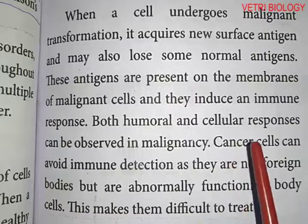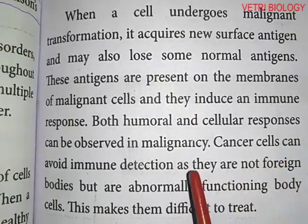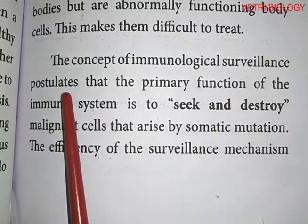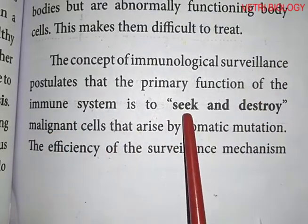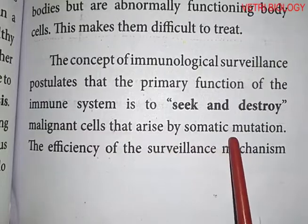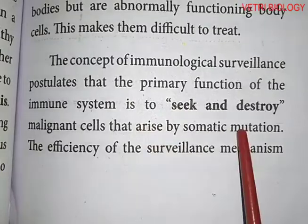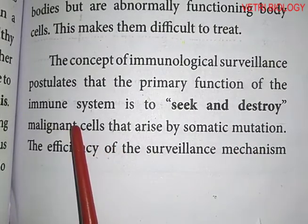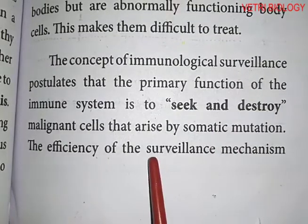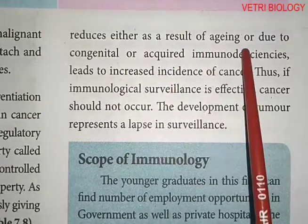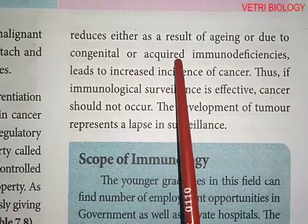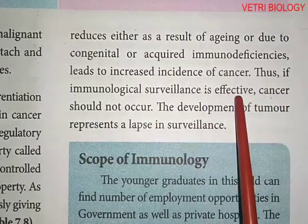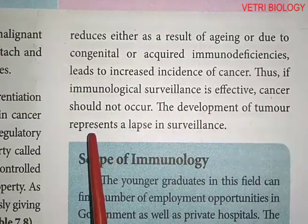It is postulated that the primary function of the immune system is to seek and destroy malignant cells that arise by somatic mutation. The efficiency of this surveillance mechanism reduces either as a result of aging or due to congenital or acquired immunodeficiencies, leading to an increased incidence of cancer. Thus, if immunological surveillance is effective, cancer should not occur, and the development of a tumor represents a lapse in surveillance.